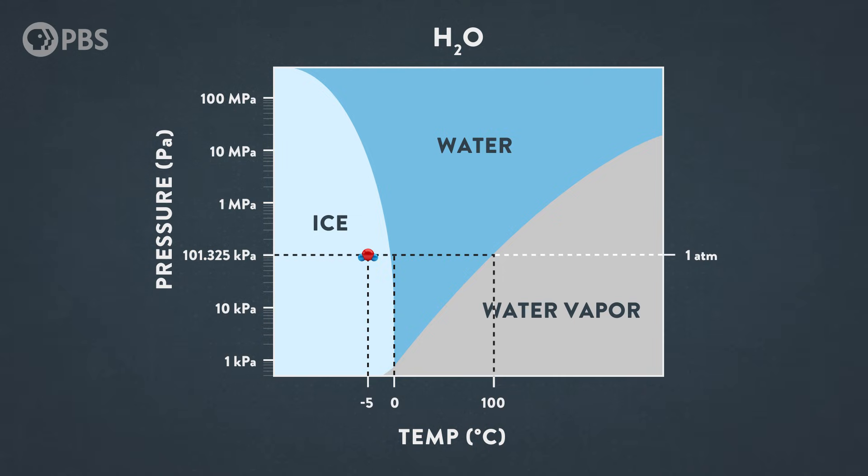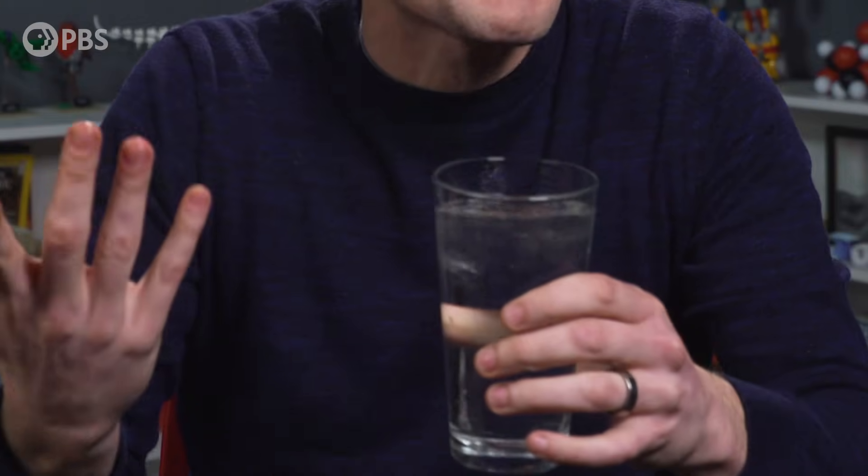This phase diagram also shows us something else: there's more than one way to melt ice. You can raise the temperature — we're all familiar with that. But water is special, because you can also melt it by increasing the pressure. For most substances, their solid form is more dense than the liquid form — think of candle wax — so putting the solid under more pressure only makes it more solid. But water ice is different and weird. Its liquid form is more dense than the solid form, and that's why ice floats. So if we take solid ice and squeeze it under a lot of pressure, forcing it to be more dense, it can become a liquid again, even at much colder temperatures where we'd usually expect it to be a solid.